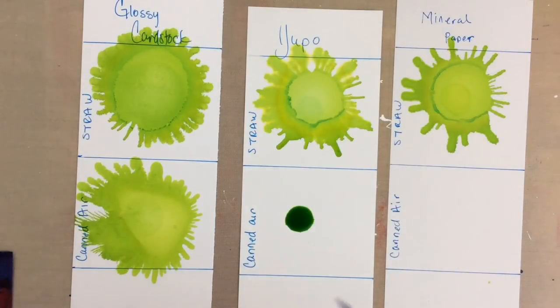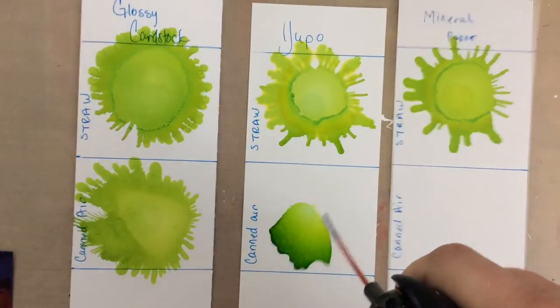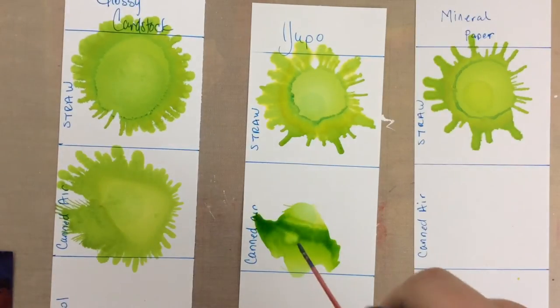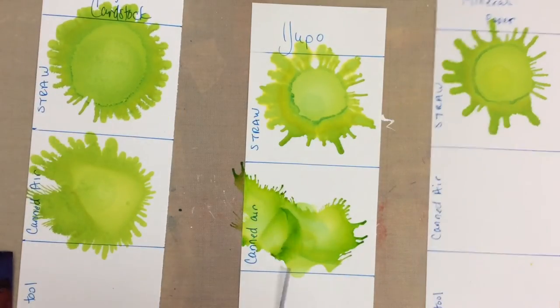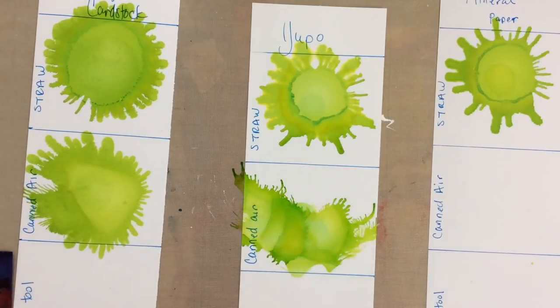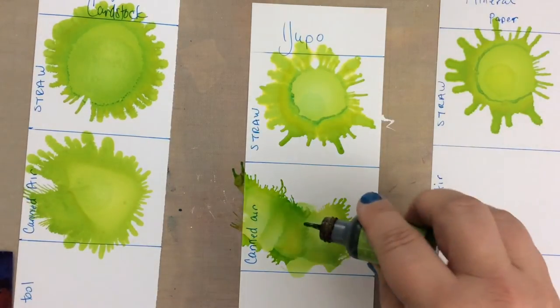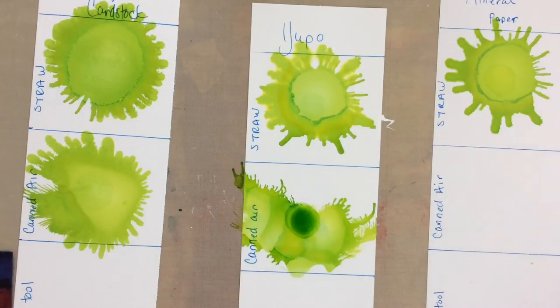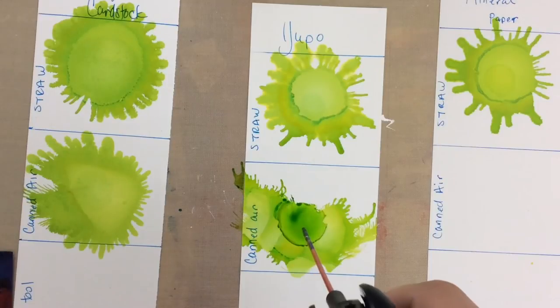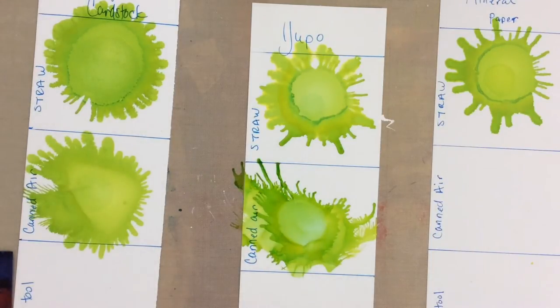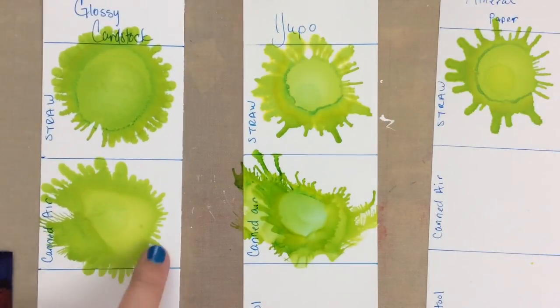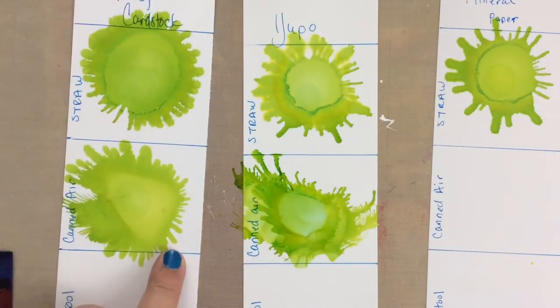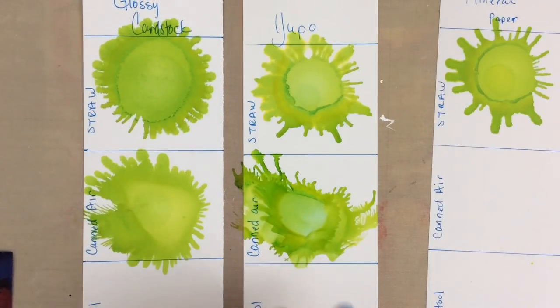Canned air and Yupo. I wasn't holding that straight up and down so I got a little bit different blowing effect. Let me try that again just because I wasn't quite spot on vertical and just see what happens. Of course, now there's other ink, it's all gonna affect each other. Okay, so get a little bit different effect. You can see how it's going further on the Yupo than it did on the glossy. It moves further because it doesn't soak in at all.